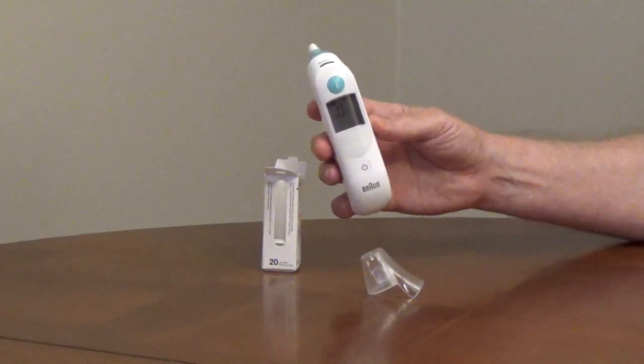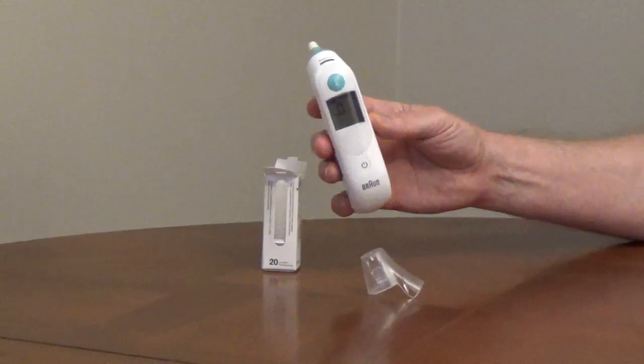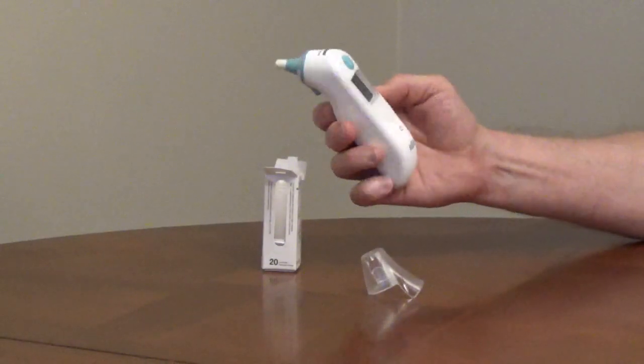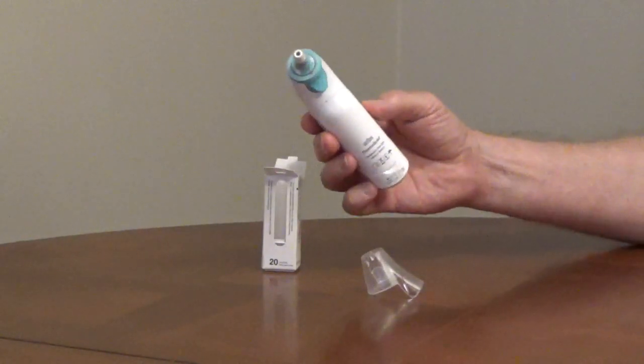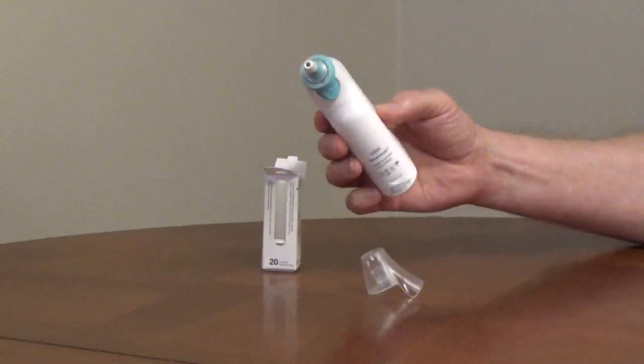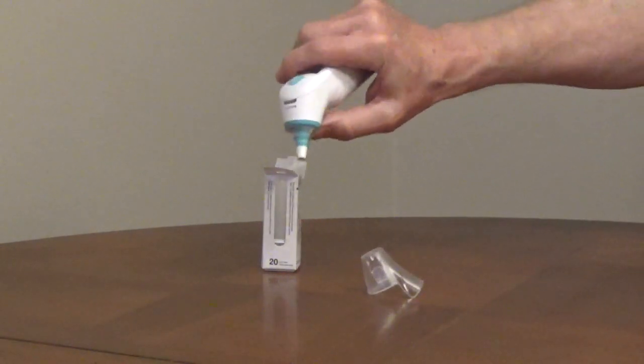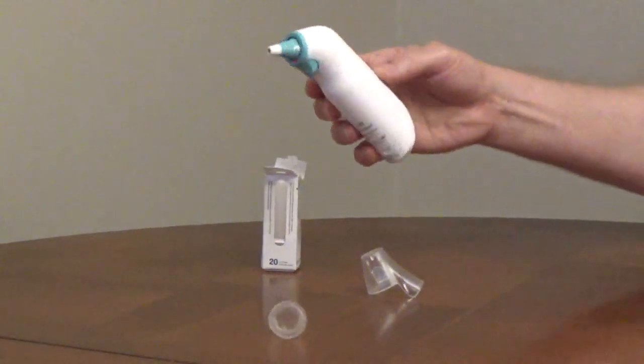The temperature can be displayed in Fahrenheit or Celsius. Press the eject button and dispose of the old lens filter, then put on a new clean lens filter. Cover the probe with the protective cap for storage.